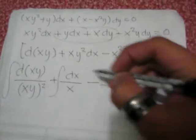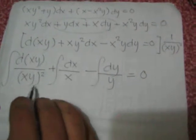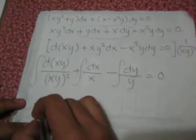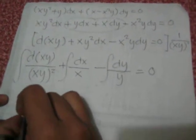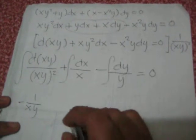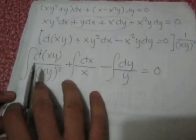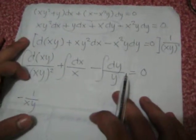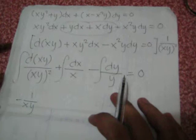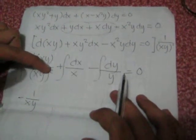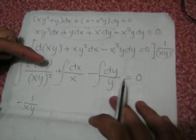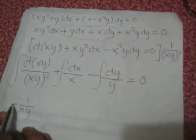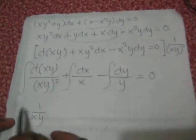gives us -1/(xy). We can bring this upstairs as (xy)^(-2), then integrate by adding 1 to the exponent, giving us (xy)^(-1) divided by -1, which produces the negative sign of this expression.